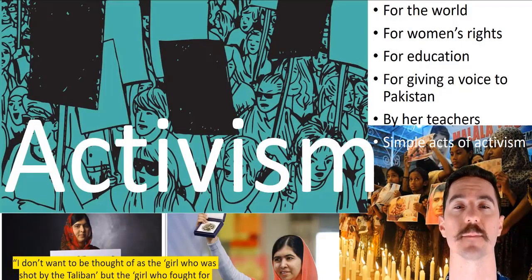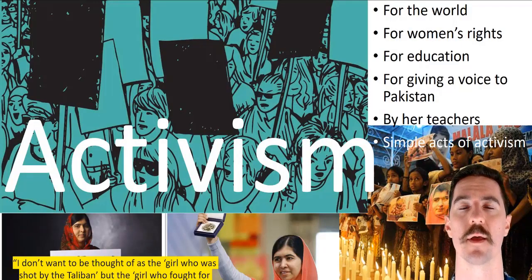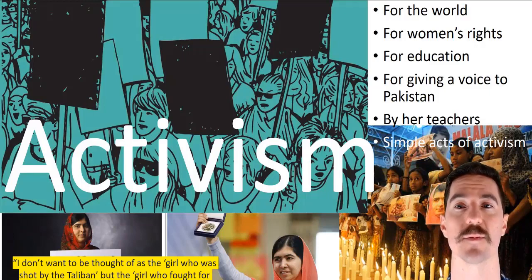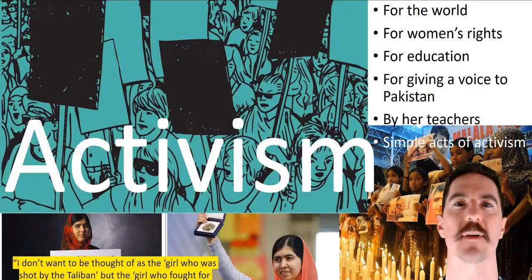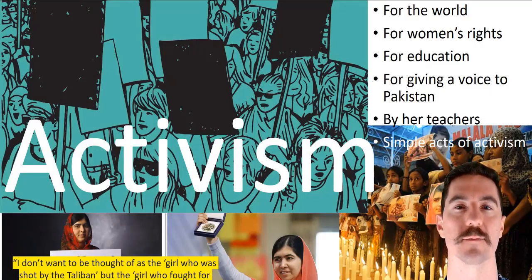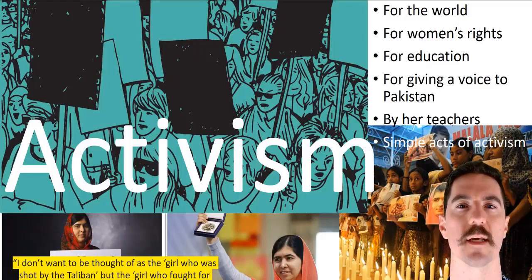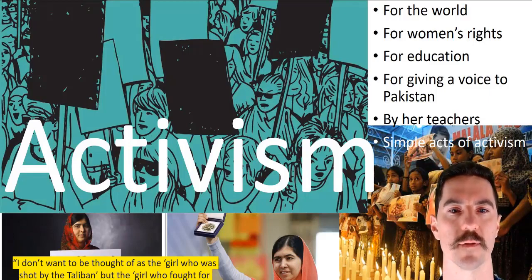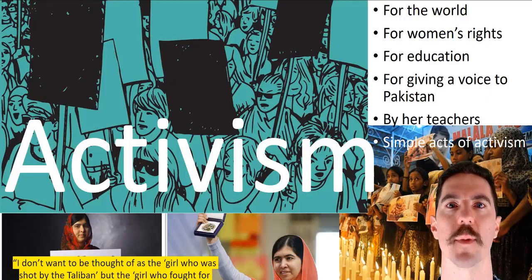The final theme is activism, which takes many forms: Malala's activism for the world, for women's rights, for education, for giving a voice to Pakistan, activism by her teachers, and more everyday simple acts such as her parents defending her or her wearing no scarf to school on certain days. These are small acts of activism. An example on page 261: 'I don't want to be thought of as the girl who was shot by the Taliban, but the girl who fought for education. This is the cause to which I devote my life.'